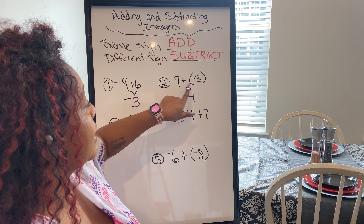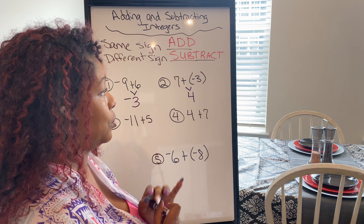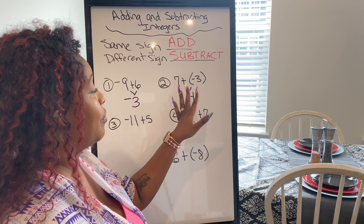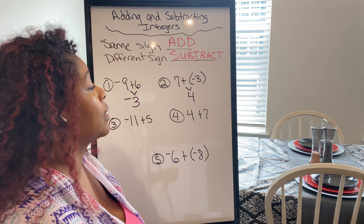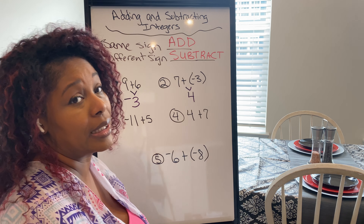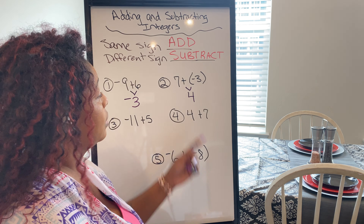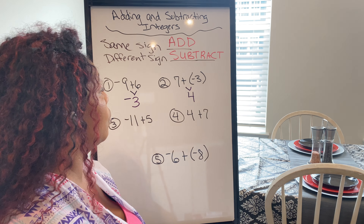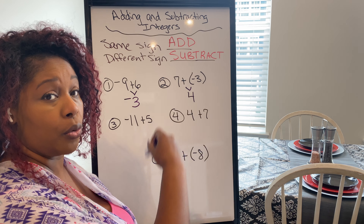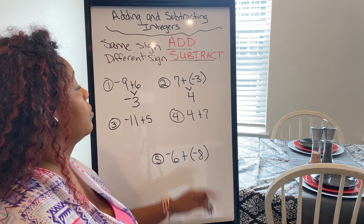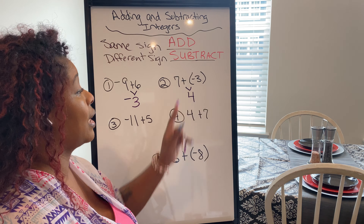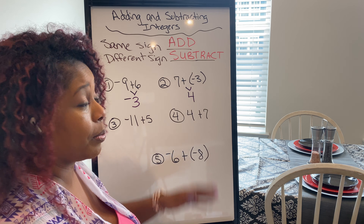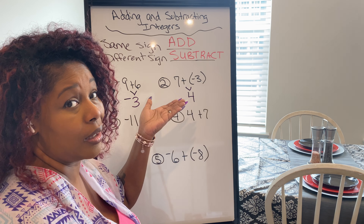Which one has the greater absolute value — the greater distance from zero? Is 7 further from 0 or is 3 further from 0? It's 7. The sign with 7 is just positive, so the answer stays positive 4.